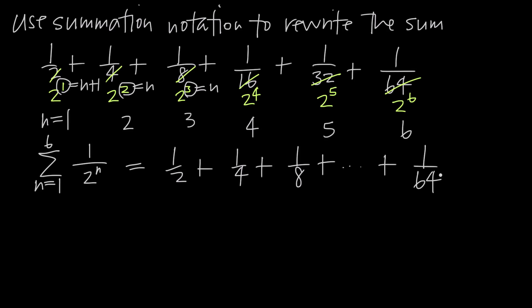And what you can see is that this expanded sum is the same as the expanded sum we were given in our original problem. We start at 1 half, we go up 6 terms, and we end at 1 over 64, and all the terms in the middle are going to match these original terms. What that tells us is that we did this correctly, and that 1 over 2 to the n does represent this expanded sum. And so this is our final answer, and this is the summation notation of the original sum.